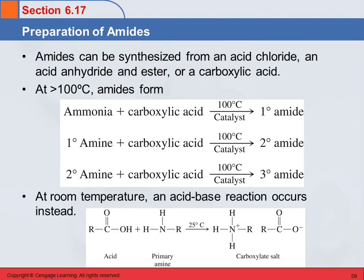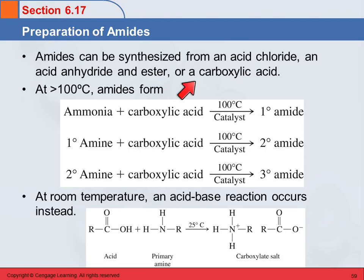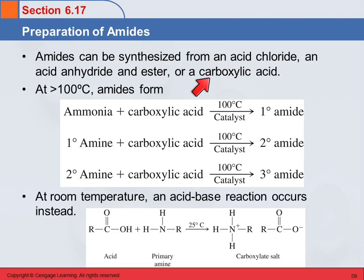Preparation of amides. Amides can be made from acid chlorides, acid anhydrides, esters, or carboxylic acids. We're only going to look at carboxylic acids.